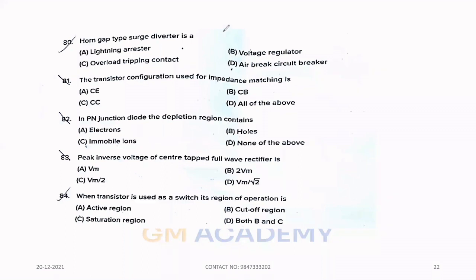Seventy-nine. Most of the substations are used to. Option C, change the voltage. Eighty. Horn gap type surge diverter is, option A, lightning arrestor. Eighty-one. The transistor configuration used for impedance matching is, common collector, option C. Eighty-two. In PN junction diode, the depletion region contains, option C, immobile ions.